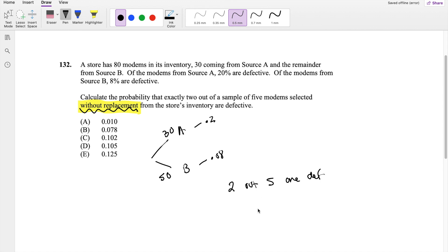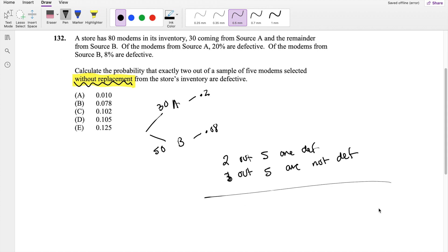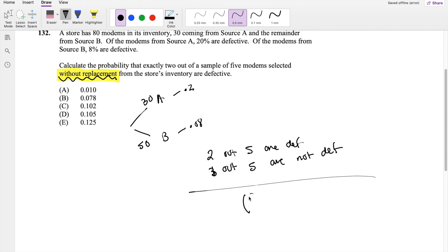But then honestly, this is not too bad. Because if 2 out of the 5 are defective, that means 3 out of 5 are not defective. And then how many are we picking? We're picking, out of 80 choices, we're picking 5.